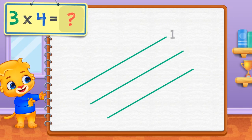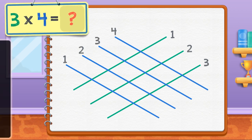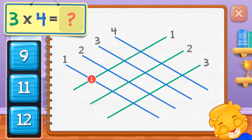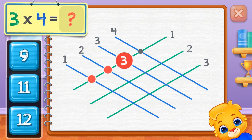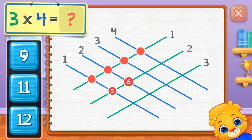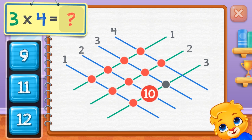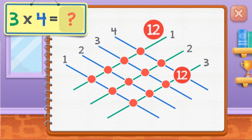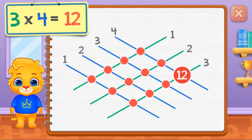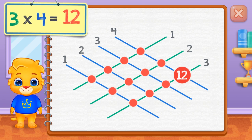Three times four equals — count the intersection points: one, two, three, four, five, six, seven, eight, nine, ten, eleven, twelve. Three times four equals twelve.